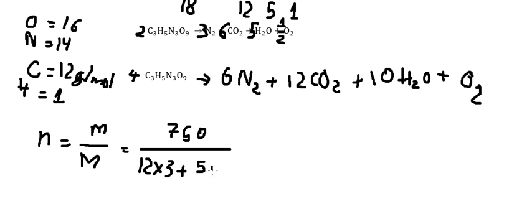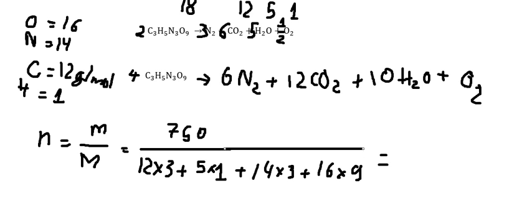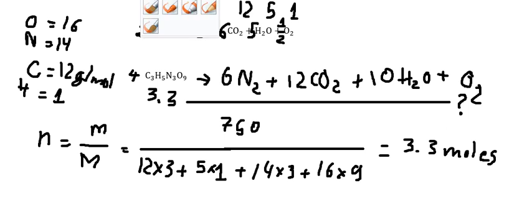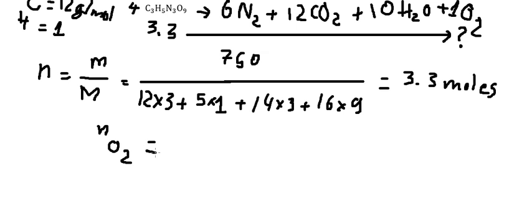We have 5 hydrogens multiplied by 1, nitrogen: 14 multiplied by 3, and oxygen: 16 multiplied by 9. We calculate this and we have 3.3 moles of nitroglycerin. We put 3.3 in here to find the moles of oxygen, with a ratio of 1 from the balanced equation.